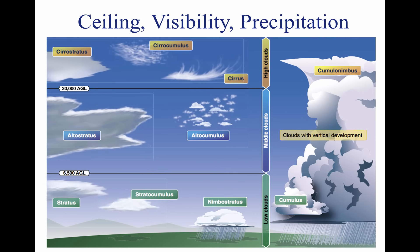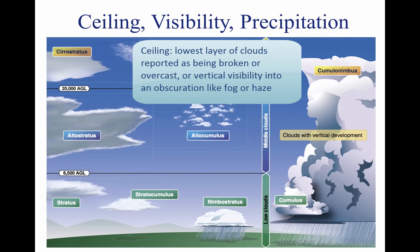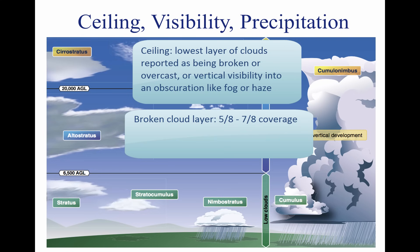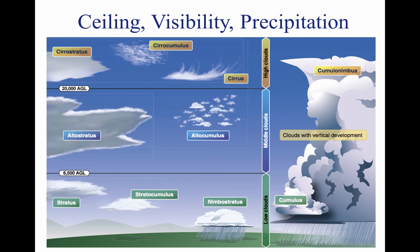For aviation purposes, a ceiling is the lowest layer of clouds reported as being broken or overcast, or the vertical visibility into an obscuration like fog or haze. Clouds are reported as broken when 5 eighths to 7 eighths of the sky is covered. Overcast means the entire sky is covered. Current ceiling information is reported by the Aviation Routine Weather Report (METAR) and automated weather stations.